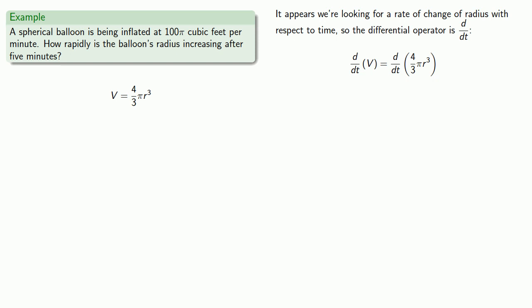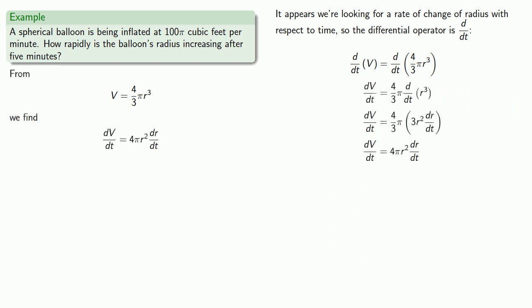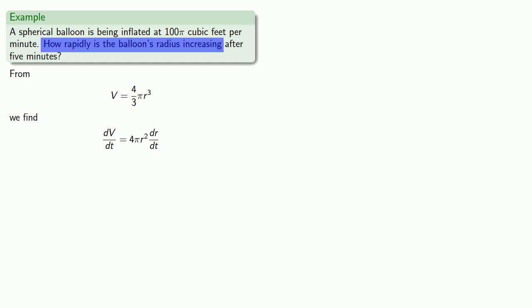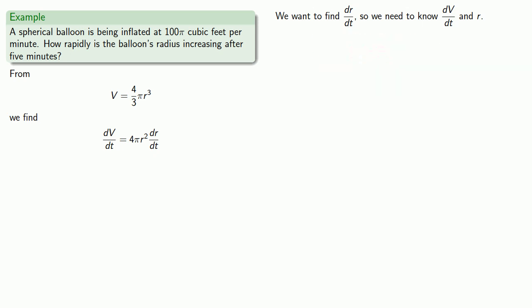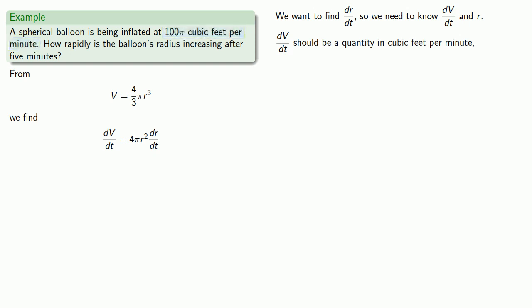So we have our relationship — let's differentiate with respect to time. Now we have our relationship between the rate of change of volume with respect to time. To find dr/dt we need to know dV/dt and r. dV/dt should be measured in cubic feet per minute, and we see we have a quantity in cubic feet per minute, so this must be dV/dt. And so dV/dt is 100π.